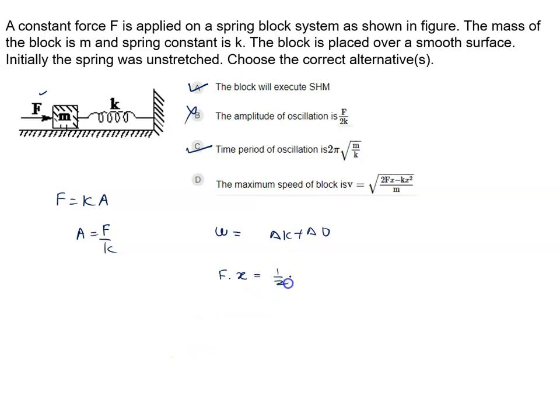Change in kinetic energy is half MV square. Change in potential energy is half Kx square. From this we calculate 2Fx minus Kx square equal to MV square.